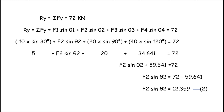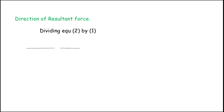Therefore F2·sin θ2 = 12.359 — this is Equation 2. Dividing Equation 2 by Equation 1: (F2·sin θ2) / (F2·cos θ2) = 12.359 / 11.34. The F2 cancels on both sides.